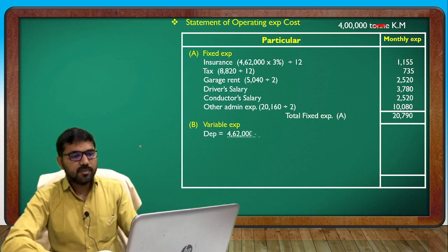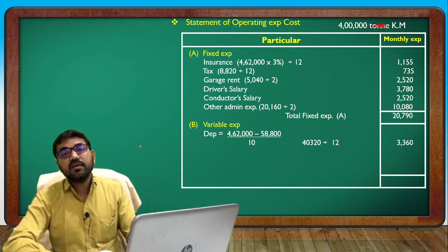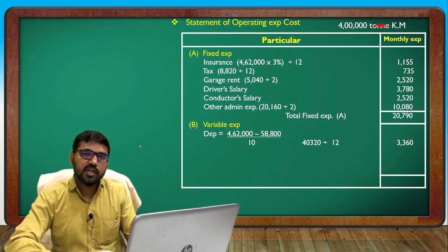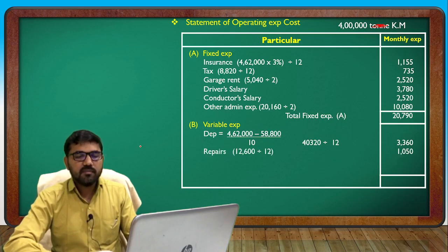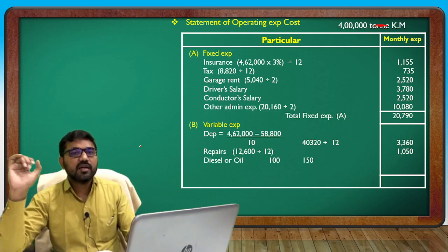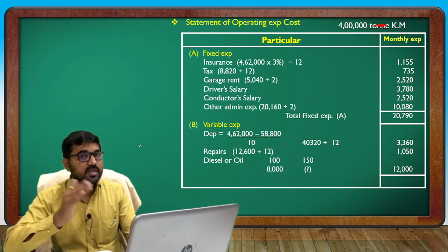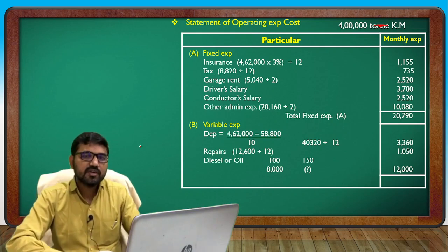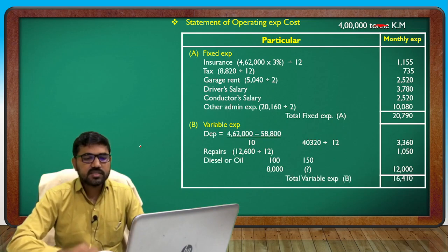Variable expenses: depreciation is cost divided by life, 10 years — annual then monthly, depreciation equals 3,360. Repairs annual converted to monthly. Diesel and oil per 100 km — normal km without passenger is 8,000. So diesel/oil for 8,000 km calculated per km giving 12,000. Total variable expense: 16,410.